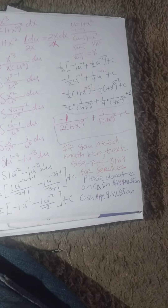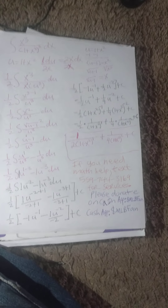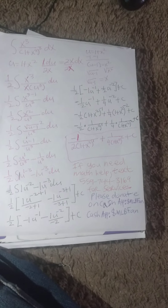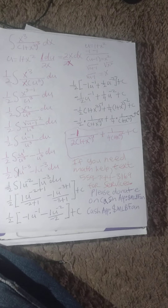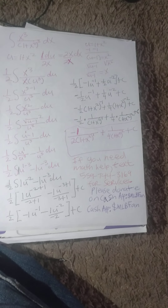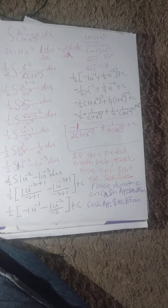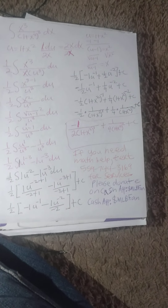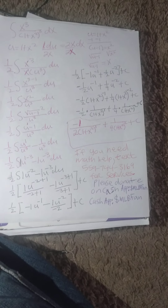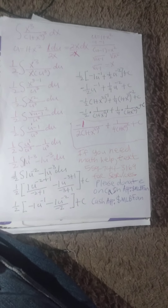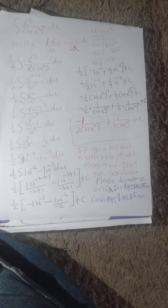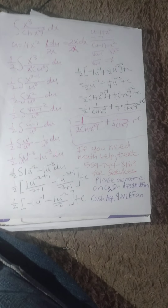So, now we replace u with 1 plus x squared. It's going to be negative 1 half times 1 plus x squared to the negative 1 plus 1 fourth times 1 plus x squared to the negative second plus c. Following laws of negative exponents, that gives negative 1 half times 1 divided by 1 plus x squared, plus 1 fourth times 1 divided by 1 plus x squared squared, plus c.